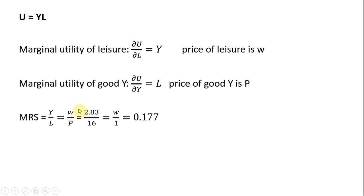So to maximize utility, the marginal rate of substitution, which is the marginal utility of leisure divided by the marginal utility of good Y, equals the ratio of the prices, the wage divided by the price of labor. However, we will plug in for Y, 2.83. That's what we found on the last slide. We'll plug in for L, 16.